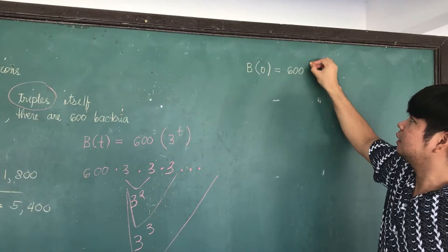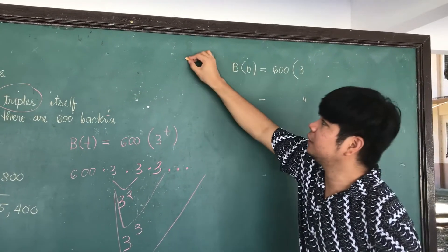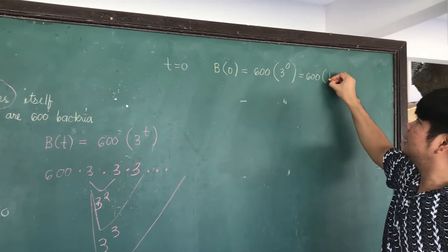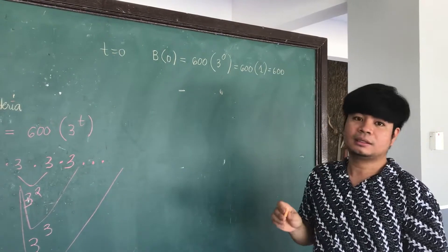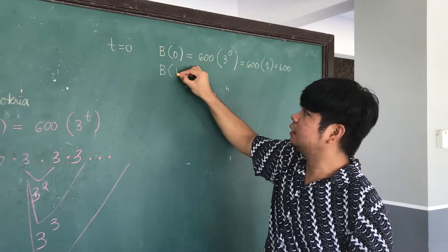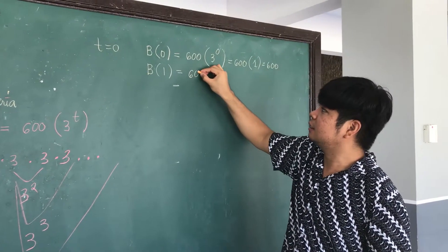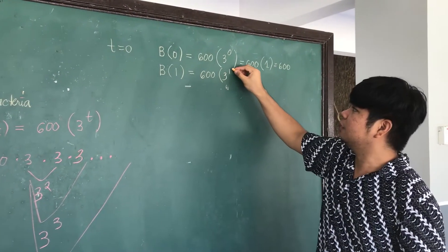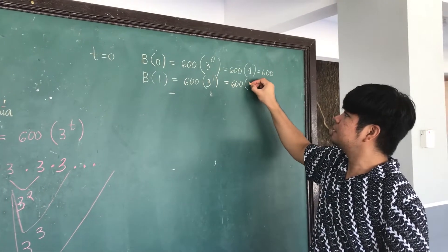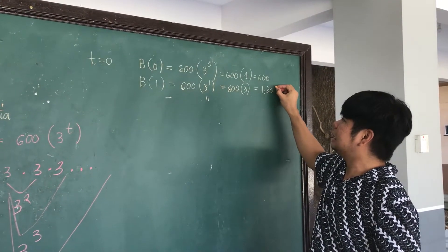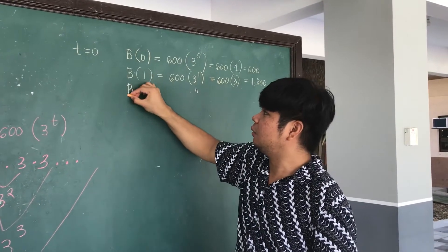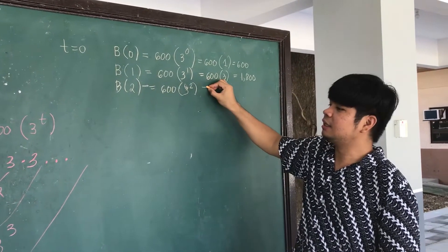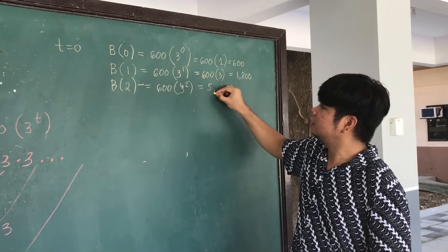B of zero equals 600 times three raised to zero, which is 600 times one, giving 600. On the first hour, B of one equals 600 times three raised to one, which equals 1,800. On the second hour, B of two equals 600 times three raised to two, which gives 5,400.